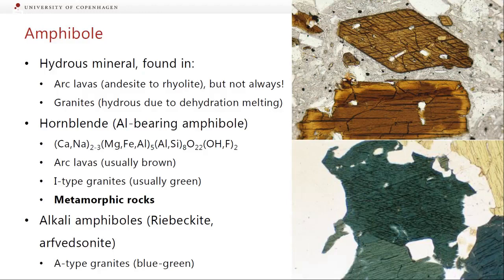We also find amphibole in granites. Granites are hydrous because they're usually formed by dehydration melting, so there's a little bit of water to make amphibole. The two types we talked about are hornblende — you can see it's brownish in colour in this rock — which is an aluminium-bearing amphibole with a big messy formula. In arc lavas it usually comes out brown; in I-type granites it's more of a green colour. It's also found in metamorphic rocks, which becomes important for granite formation. Alkali amphiboles, like riebeckite and arfvedsonite, are found in A-type granites and are that distinctive blue-green to sometimes purple colour.